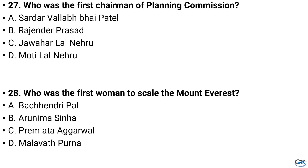Question number 27. Who was the first chairman of the Planning Commission? Option A: Sardar Vallabhbhai Patel, Option B: Rajendra Prasad, Option C: Jawaharlal Nehru, Option D: Motilal Nehru. And the answer is Option C: Jawaharlal Nehru.